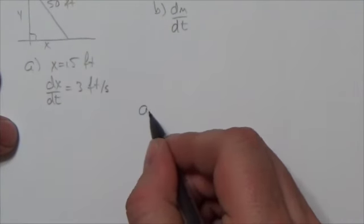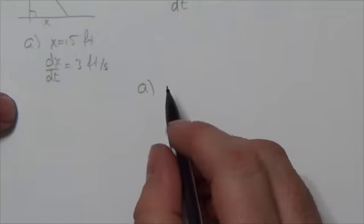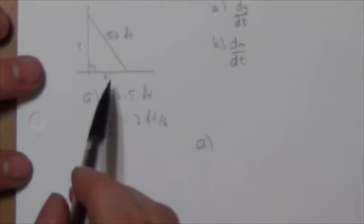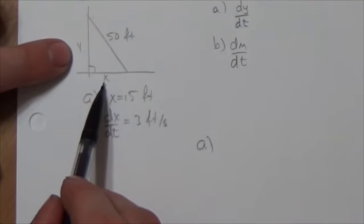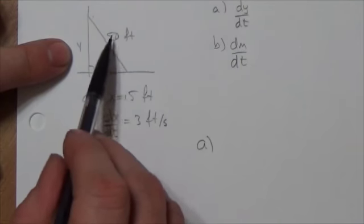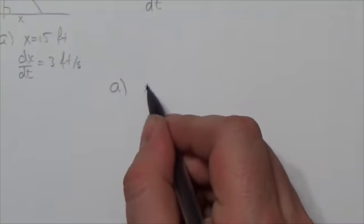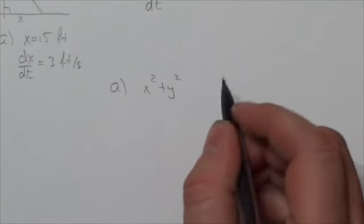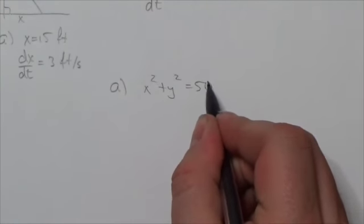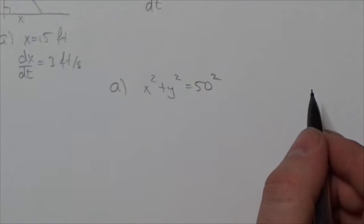So, let's take a look. Let's start this. And we're going to start by relating those two variables there. We've got that constant hypotenuse here. So I think a good tool would be to use the Pythagorean theorem here. x squared plus y squared is going to equal 50 squared.